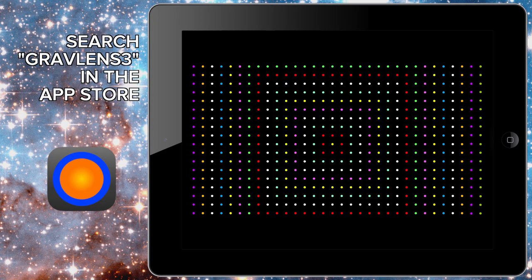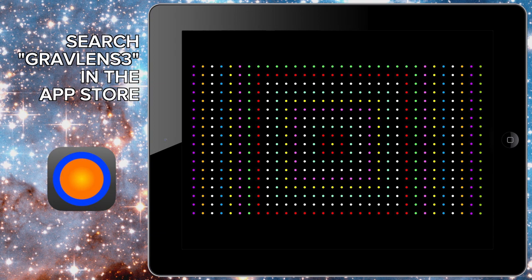I can illustrate this using this iPad app called GravLens. We start out with a uniform grid of distant galaxies. However, if we superimpose a large but invisible mass,